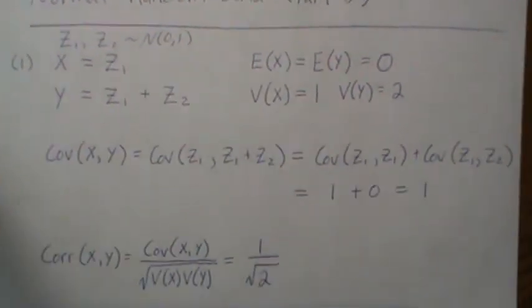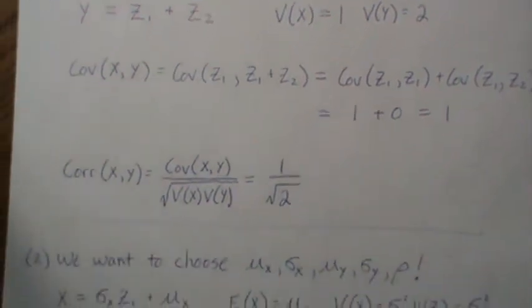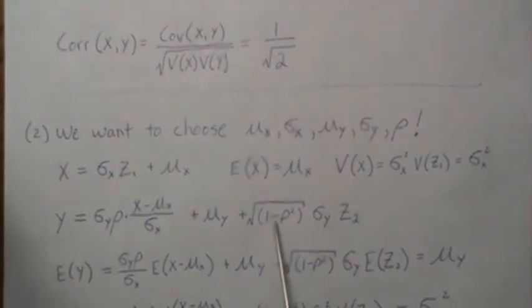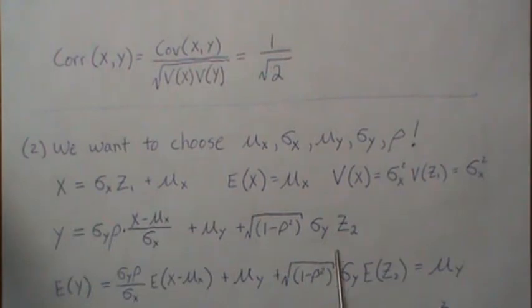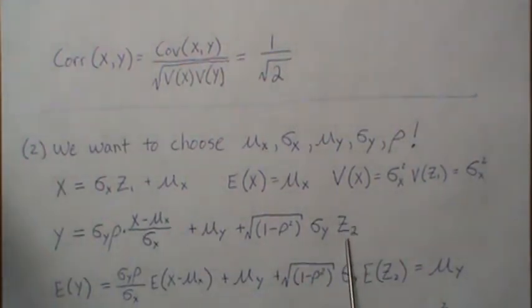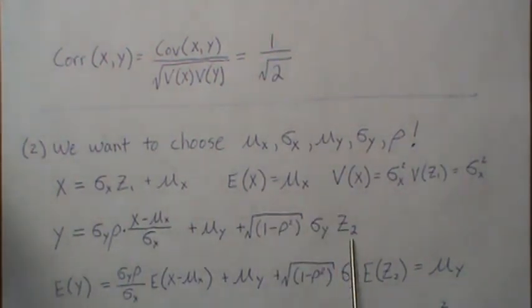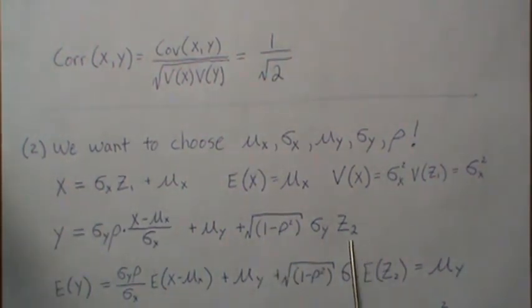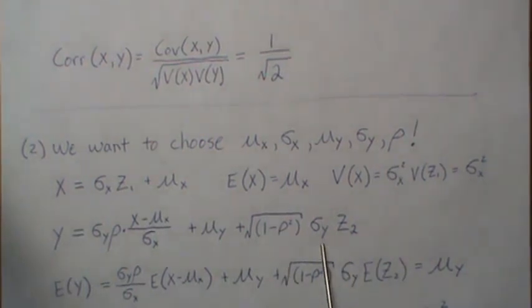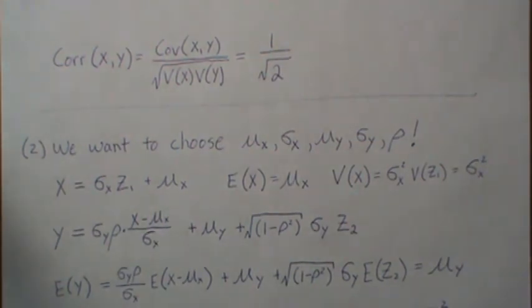One note: in the original video, instead of generating a standard normal for z2, I actually generated a normal variable with mean zero and a specific standard deviation. It ends up being exactly the same, but I wish I had kept it in the simpler form for easier clarification. I hope that answers your question — happy computing, thanks!